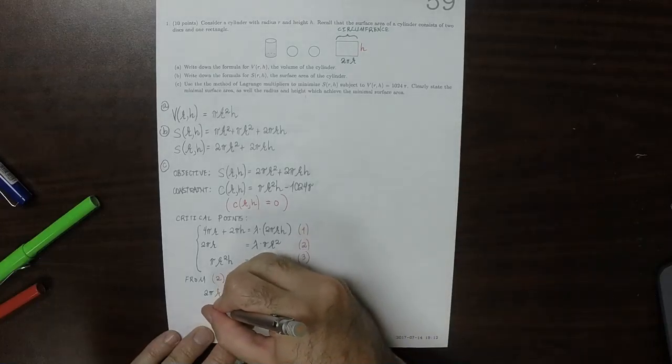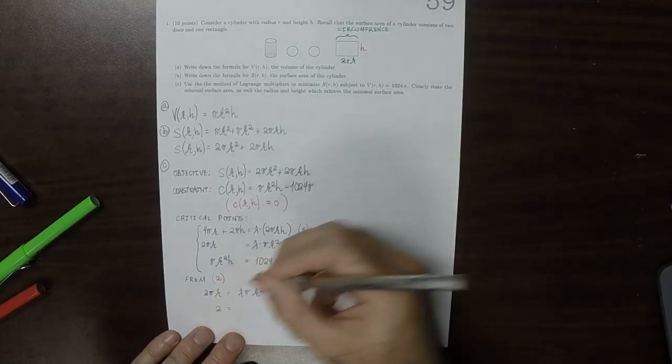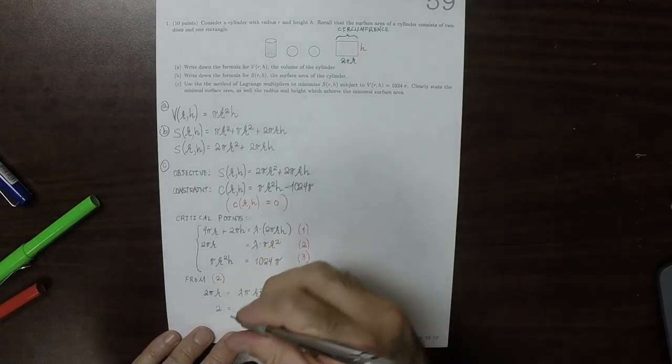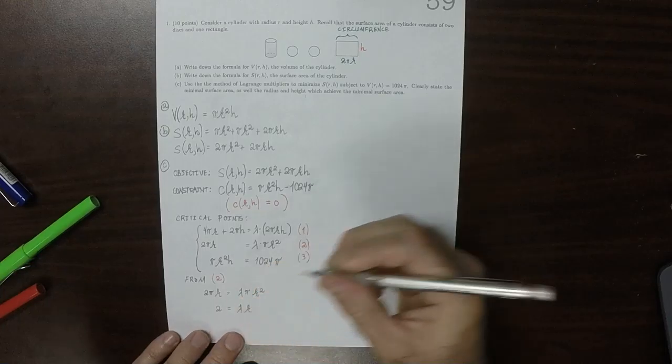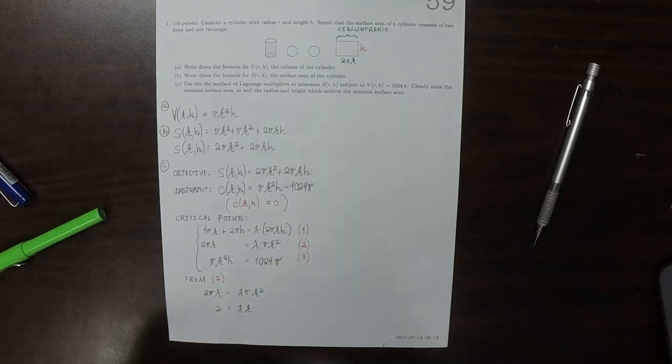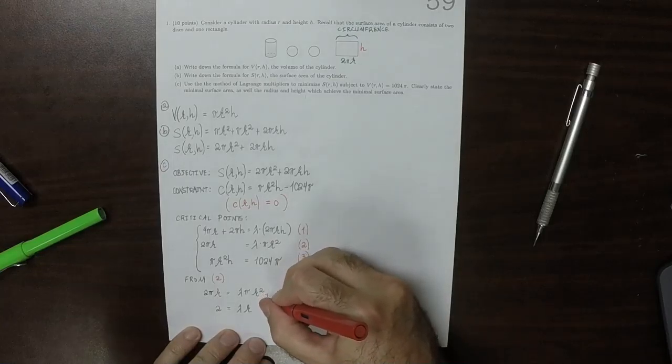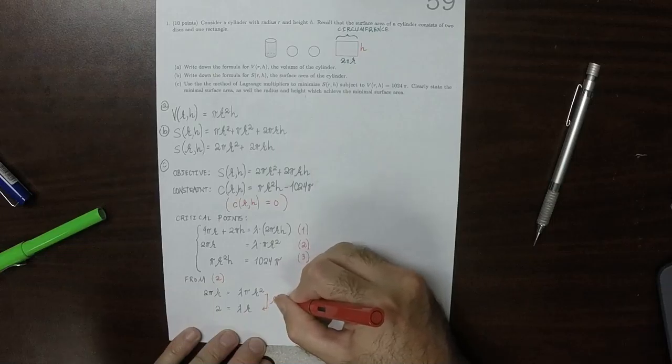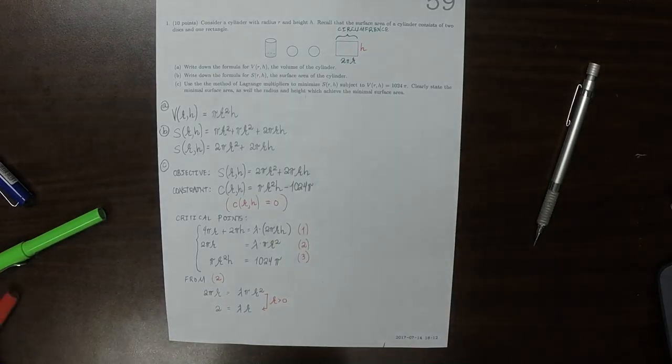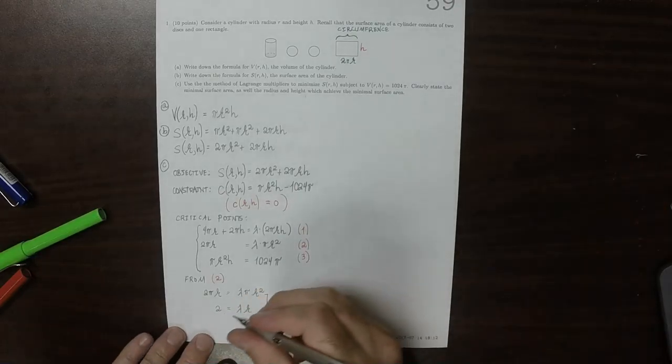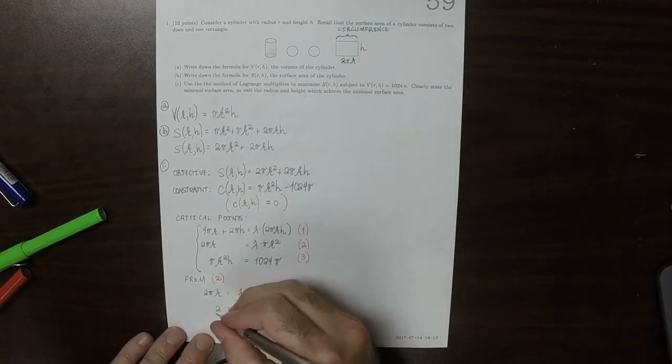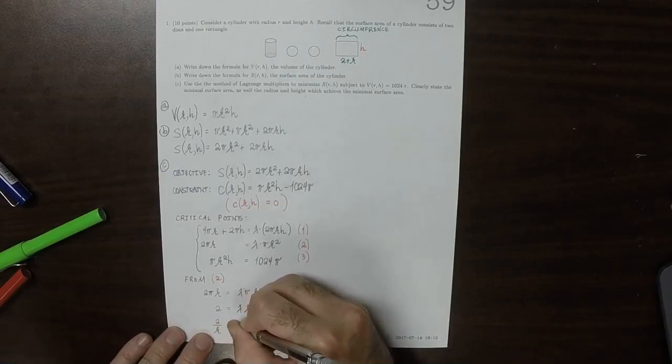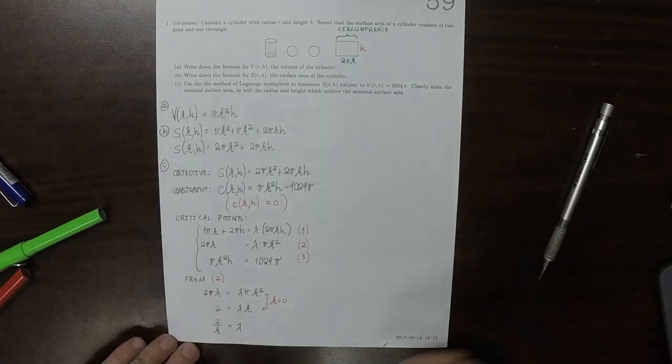So, it's possible to do this division by r because r is a positive quantity because this is a cylinder. So, then we could solve for lambda by dividing by r again to get 2 over r is lambda. Okay, so that was from equation 2.